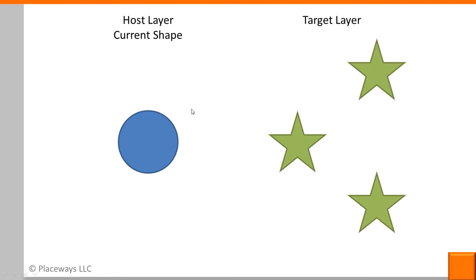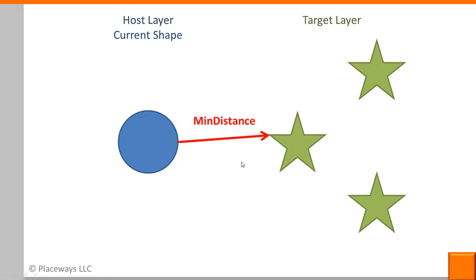Here I have a graphic. The blue is the current feature that the formula is working on, in what's called the host layer — this is where I've written my attribute formula, and the formula works through one feature at a time doing its calculation. Over here is the target layer, which could be any layer in the analysis. Something like min distance measures the distance from the current shape to the nearest feature in the target layer.